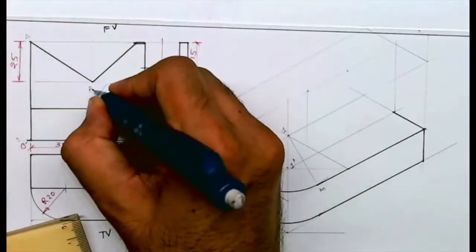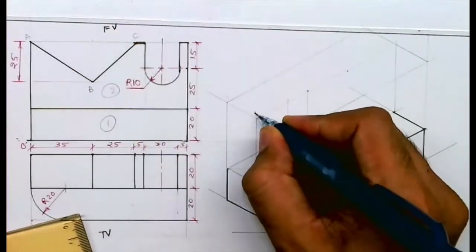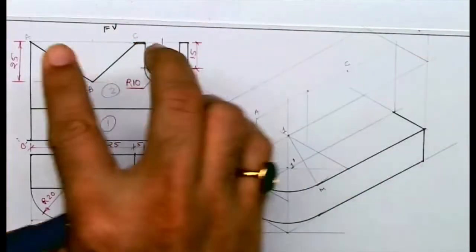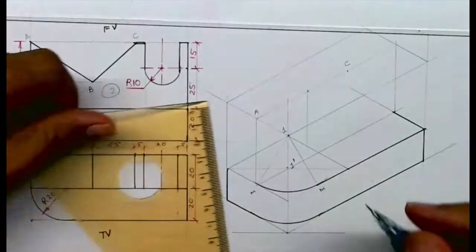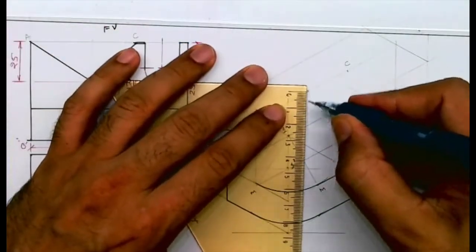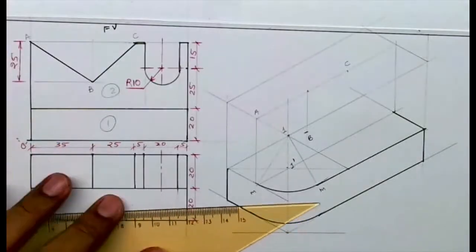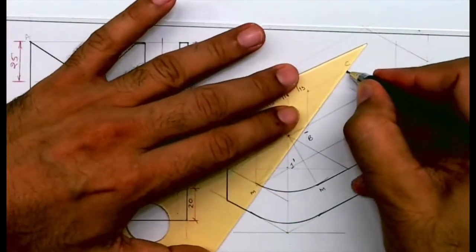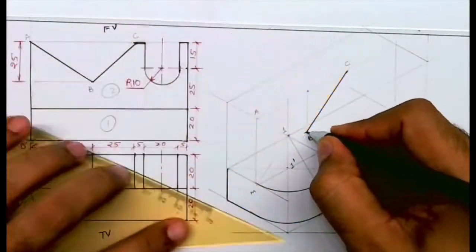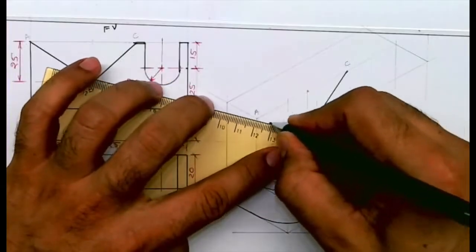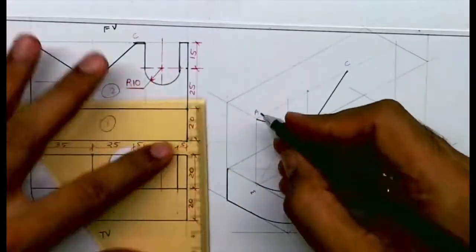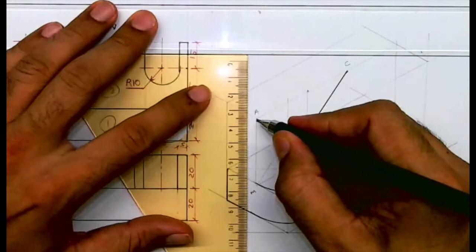This is A, this is B, this is C. C and B is here. You have to go down by 25.